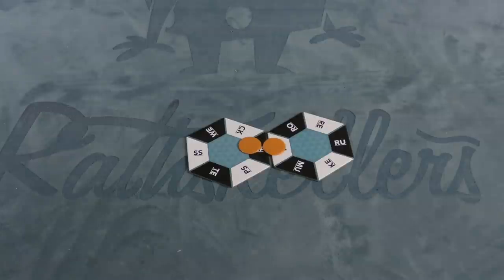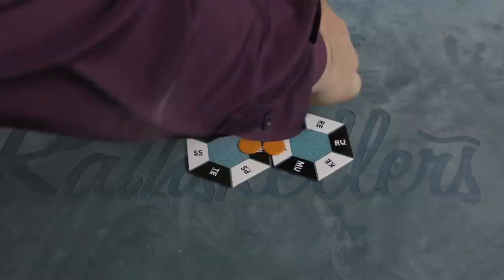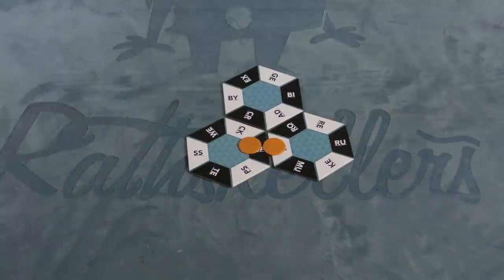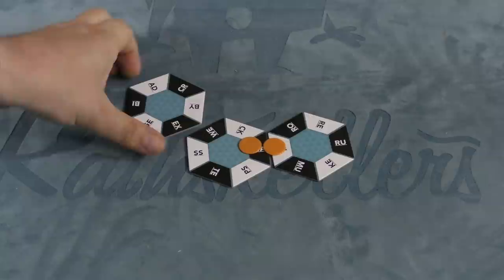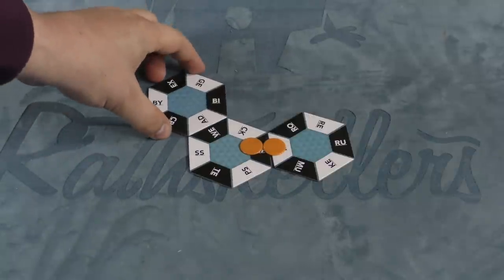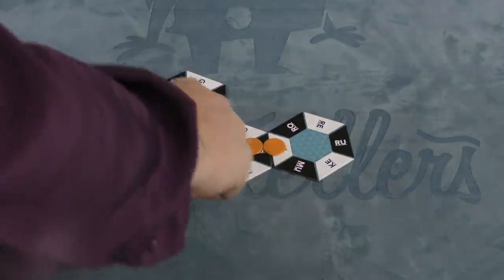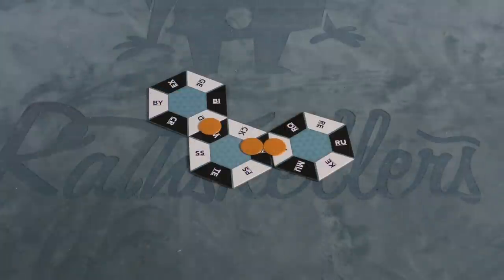So let's say, if I made a word that matches somewhere else on here. Maybe I can take this and make weed. So I can make the word weed here, but since I already have an orange chip on one of the two tiles, I only get to put one chip out.